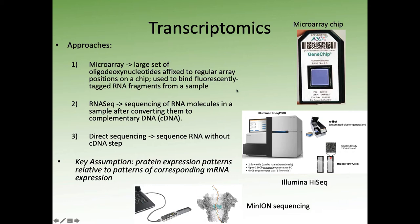RNA-seq is the more frequently applied approach in transcriptomics. In this case, we're looking at sequencing of RNA molecules by converting them to cDNA. This is largely the way that we do transcriptomics — we take an RNA sample, convert it to complementary DNA, throw some adapters on the ends, and then sequence it on a system like the Illumina HiSeq. There are also ways to do direct RNA sequencing without the cDNA step, and Oxford Nanopore has been developing these technologies on their MinION sequencers.